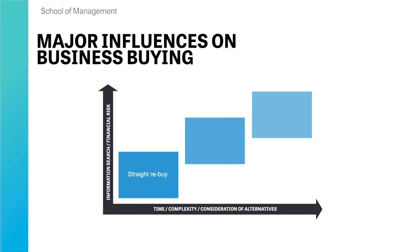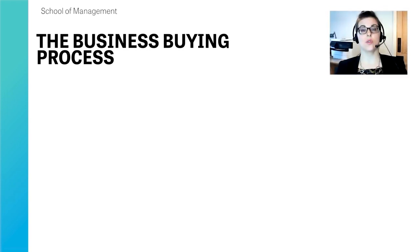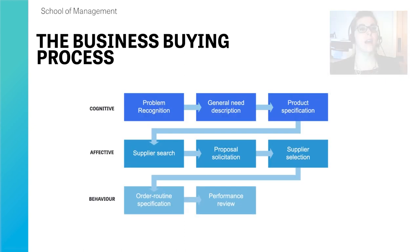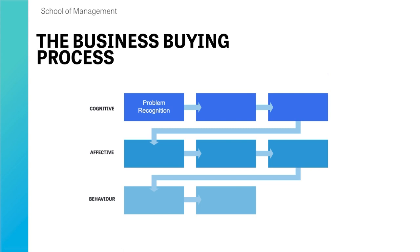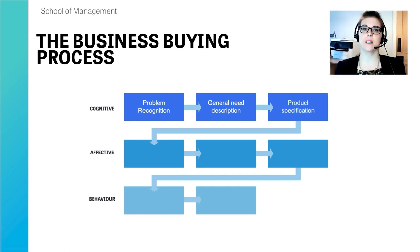With a straight rebuy you're happy with what you've bought and the supplier, so you make no changes — just press the button and order again. Increased repetition means less time and complexity goes into considering alternatives, and the information search is almost non-existent. In contrast, a new task purchase is very complex and time-consuming, with the information search closely correlated to the perceived financial risk. The formal business buying process is also far more structured than consumer purchasing.